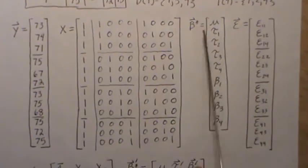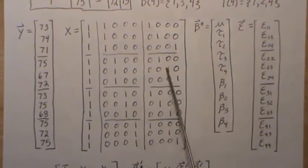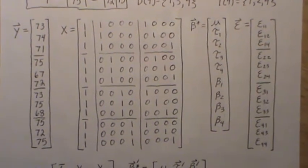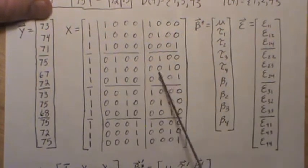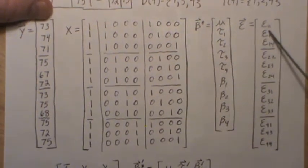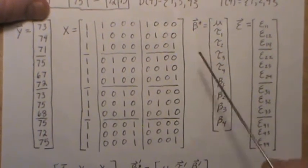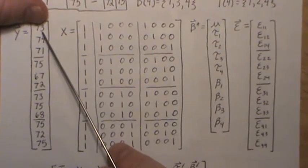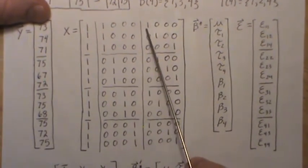We also have to remember where they belong. You can think about the double index notation over here. This first observation is treatment one, block one; 74. The second observation is treatment one, block two; 71. Treatment one, block four, and so on down.